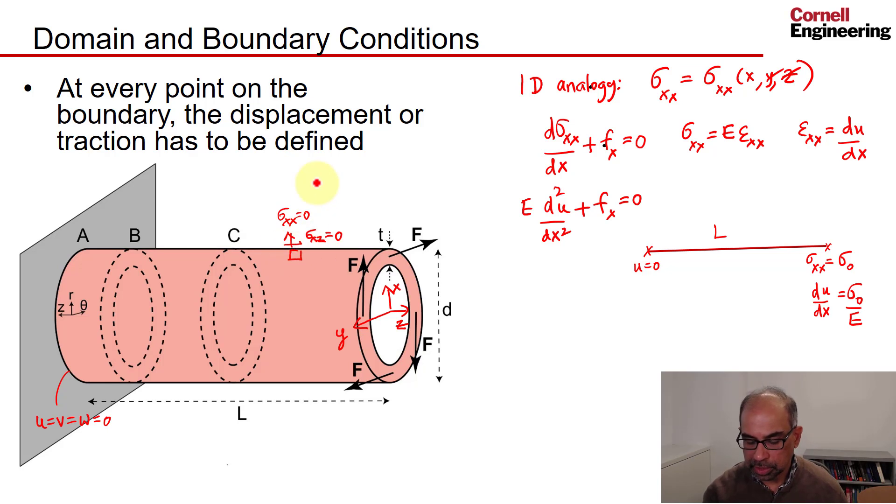Because here, the surface is aligned, the free surface is aligned with the coordinate system, we can write it by inspection. Now, if you get to a place like that, you have to use stress transformations, which I presume many of you have seen. But I like to think about it when it's aligned with the coordinate system, because that's easy to get an intuition for.